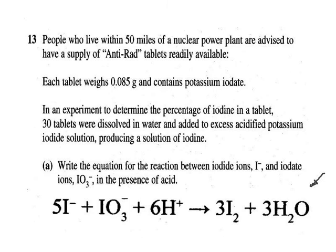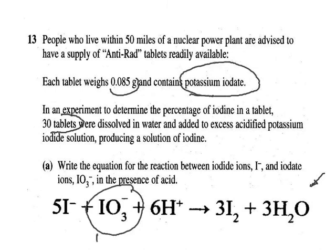Taking in the key facts: 0.85 grams per tablet, a total of 30 tablets. An important subtlety: in the tablets, iodine is present as iodate IO3⁻, and one mole of iodate produces 3 moles of iodine. Make sure to record that — each tablet generates 3 moles of I2 per mole of IO3⁻.